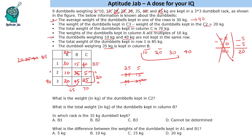Now let us answer the questions based on it. What is the weight of the dumbbells kept in C2? So C2 we have 5 kg.